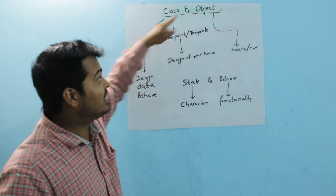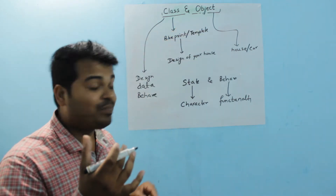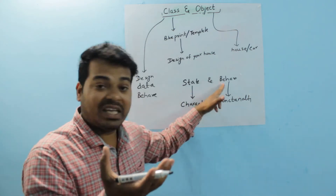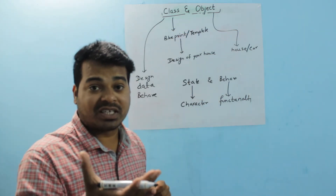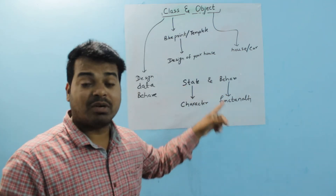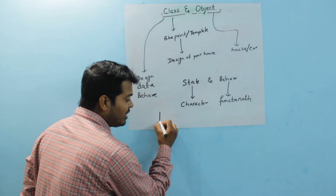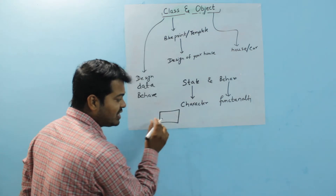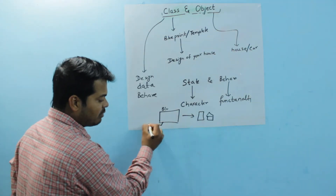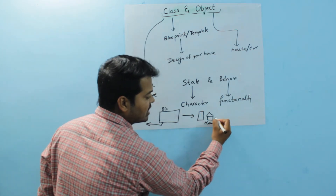An object is any entity which has its own state and behavior — where state is the characteristics of an object and behavior is the functionality of an object. Whenever you construct a house, first you make the blueprint, and once the blueprint is ready, you construct your house. So the blueprint is your class and the house is your object.